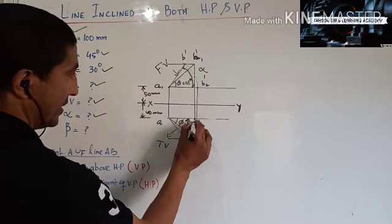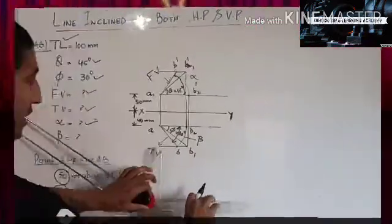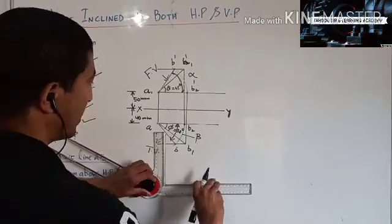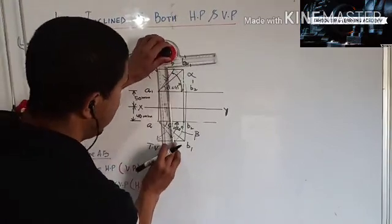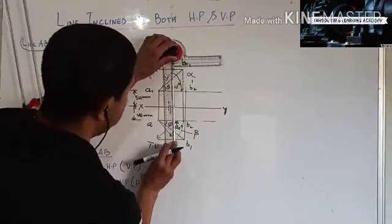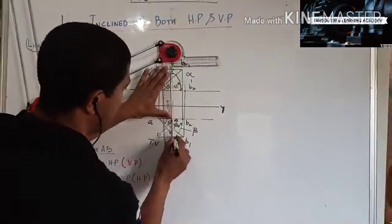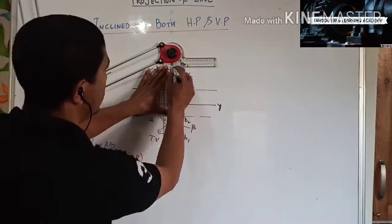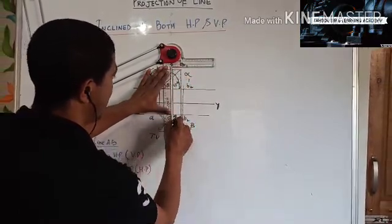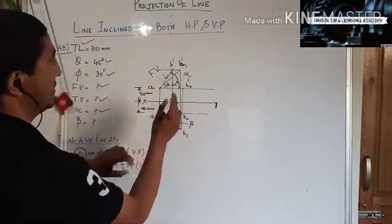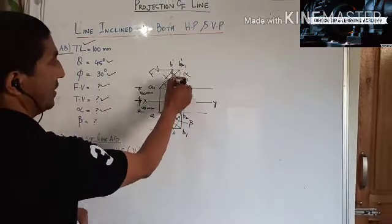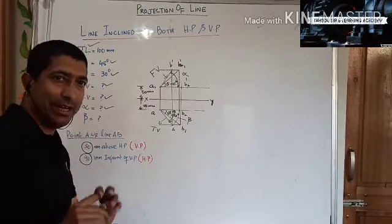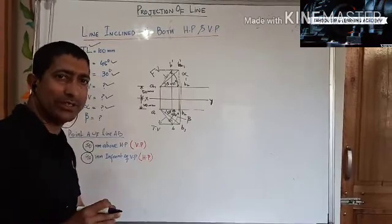The important thing I would like to mention is: how do you know that your solution is correct? These two points, B and B', should be in one straight line. This indicates that your solution is correct.